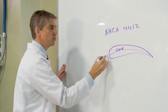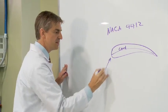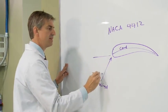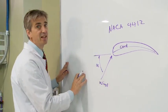The angle the cord line makes with the wind, so this is the prevailing wind, this is the cord line, this angle here, alpha, is called the angle of attack.